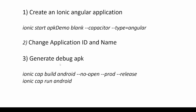Now to generate the debug APK, run the command Ionic Capacitor build Android. It will generate the Android folder for the application. We are specifying here no-open as we don't want to open Android Studio and run it from the command prompt only. Provide the option for production and release. After that, run the command Ionic Capacitor run Android, which runs the application on the emulator and before that it generates the debug APK.